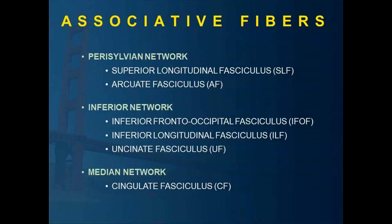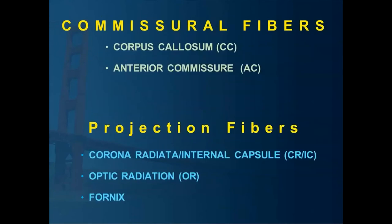I like to look at this in terms of different buckets of pathways, such as the associative fibers — classically the things we're so concerned about with the language system, like the SLF, the AF, the IFOF, and the ILF. And then we look at other aspects of the motor system, principally the projection fibers, such as the corona radiata and the corticospinal tract.